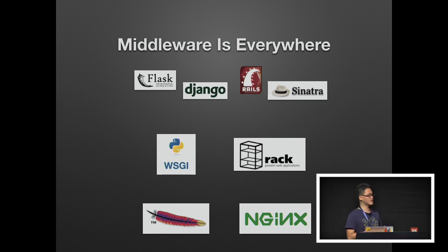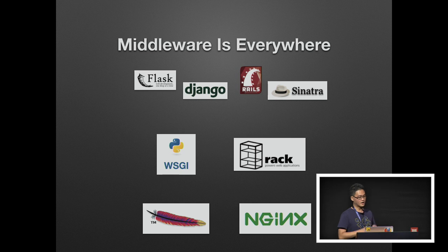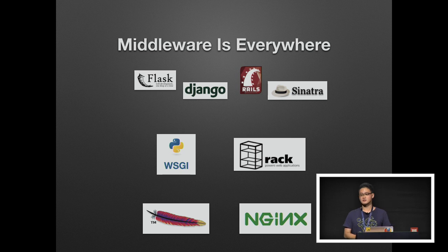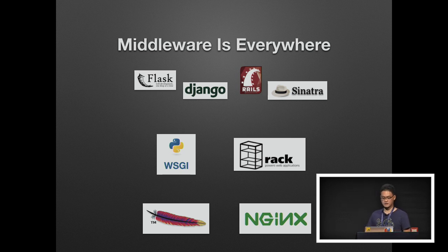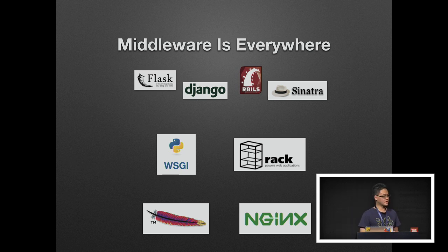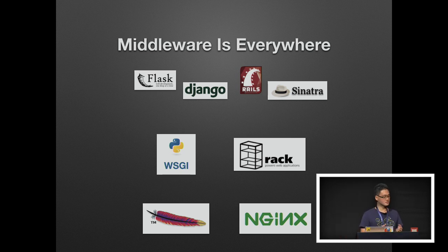In Python, there's this standard called the Web Server Gateway Interface, or WSGI in short. They allow Python applications to have a universal way to interface with web servers. There's also a similar interface in Ruby, which is called Rack. They allow Ruby applications and frameworks including Rails to run on top of it. The WSGI and Rack standards also enable the powerful middleware architecture, allowing web applications on top to use the same middleware regardless of the particular framework they choose.